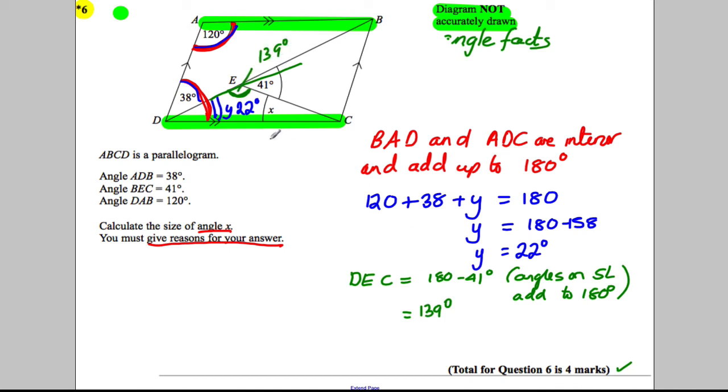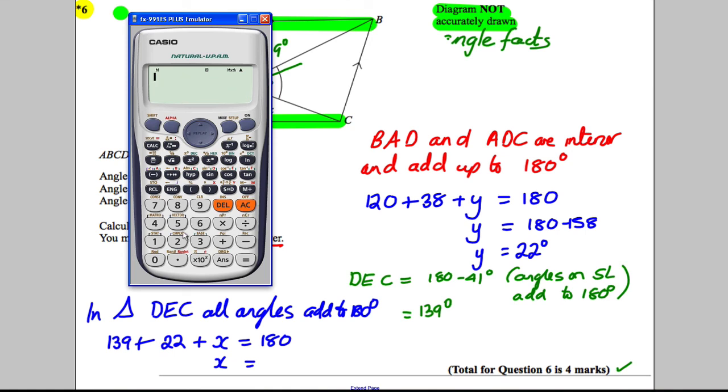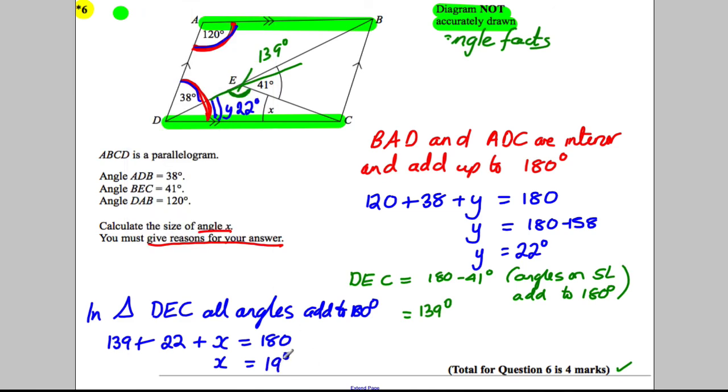Now I can find X, the missing angle, because I know DEC is a triangle. So in triangle DEC all angles add to 180 degrees. So therefore 139 plus this one we found earlier, 22, plus X is equal to 180. So X must be 180 subtract these two. So X must be 180 subtract 139 and subtract 22, which is 19 degrees. And X is equal to 19 degrees, and we're done.